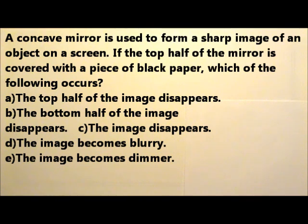A concave mirror is used to form a sharp image of an object on a screen. If the top half of the mirror is covered with a piece of black paper, which of the following occurs?